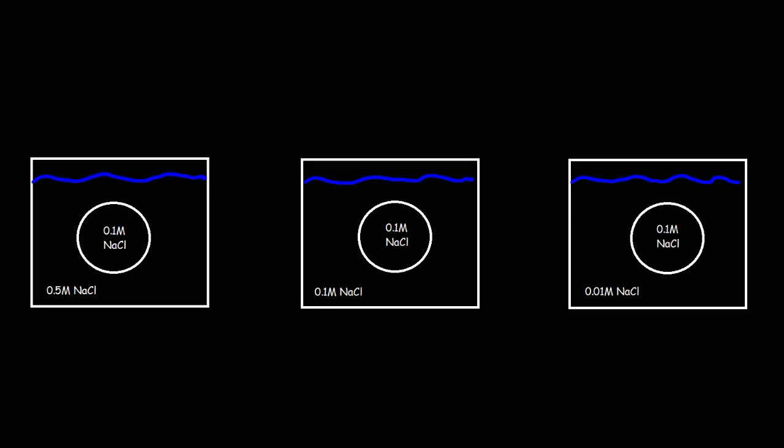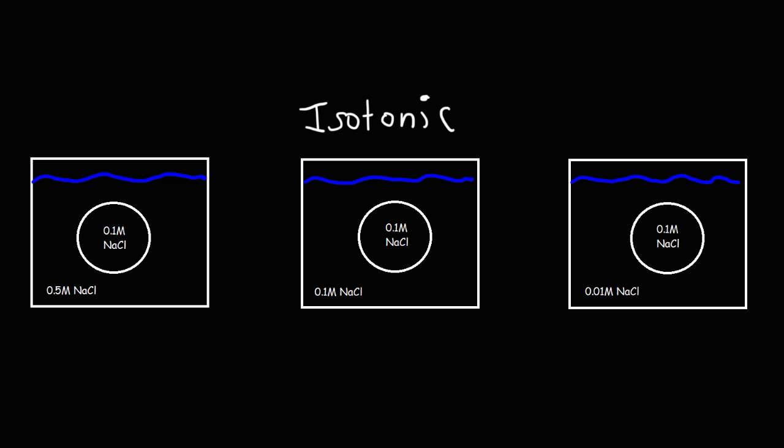Here we have three containers with salt water solutions, and in each container we placed a giant cell. Looking at these three solutions, which one is a hypertonic solution, a hypotonic solution, and an isotonic solution? We can easily spot the isotonic solution — the word 'iso' means the same, so the one in the middle has to be an isotonic solution, because the solute concentration outside the cell is equal to the solute concentration inside the cell.